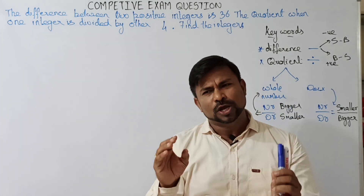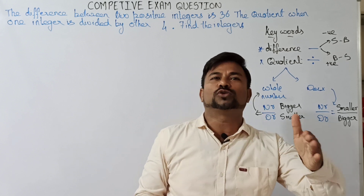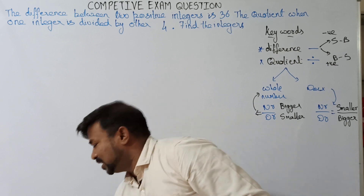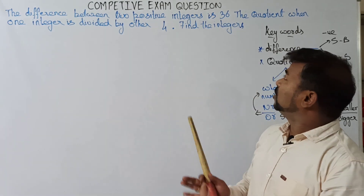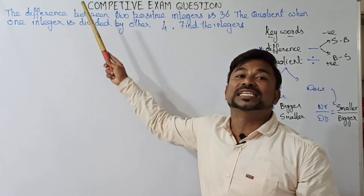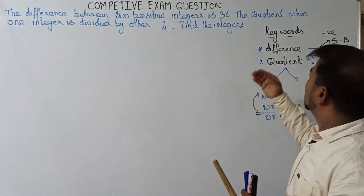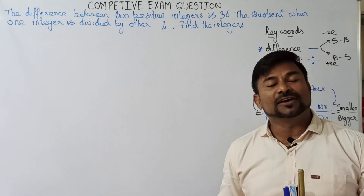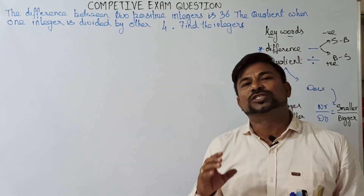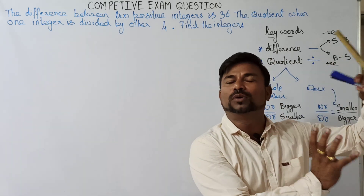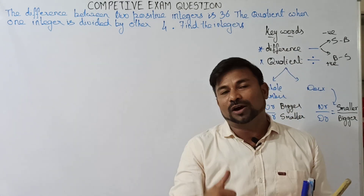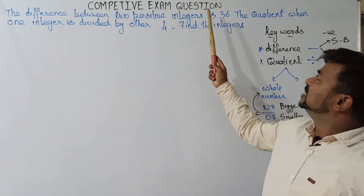I have taken a small tricky sum and I am going to lay a foundation by which you can go ahead with many sums of this model. The keywords here: the first one is 'difference.' We should remember that words like difference, minus, take away, subtract, and 'five years ago' all correspond to the minus sign.